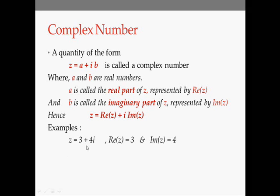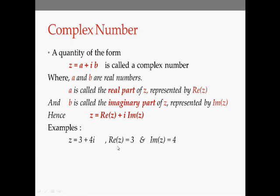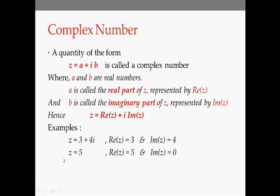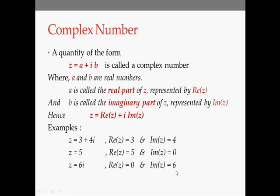For example, if Z = 3 + 4i, the real part is 3 and the imaginary part is 4. If Z = 5, the real part is 5 and the imaginary part is 0 — even purely real values can be written in this standard complex form. Similarly, if Z = 6i, the real part is 0 and the imaginary part is 6, and it can still be written as a complex number.